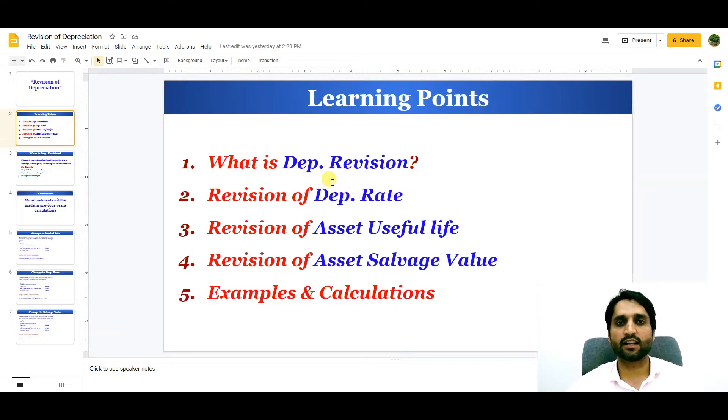We will see what is depreciation revision and the revision of depreciation rate, if the rate of depreciation changed, and if the asset useful life increased or decreased, how we can calculate the depreciation. After that, we will see the asset salvage value, if the salvage value or the selling market price at the end of useful life changed. So how to calculate the depreciation? All of these things we will see with the help of examples and calculations.